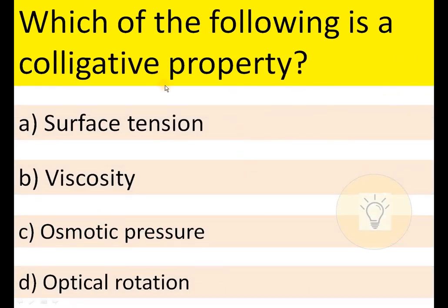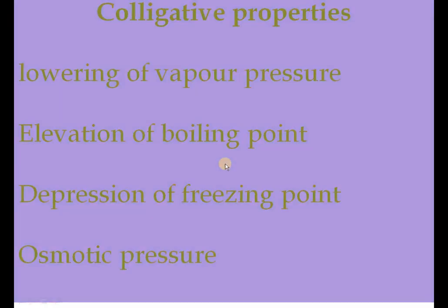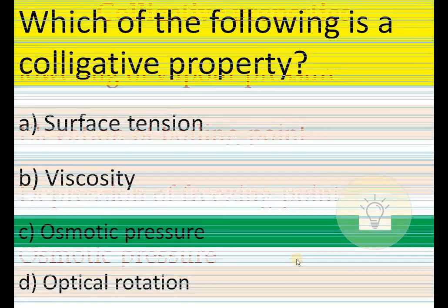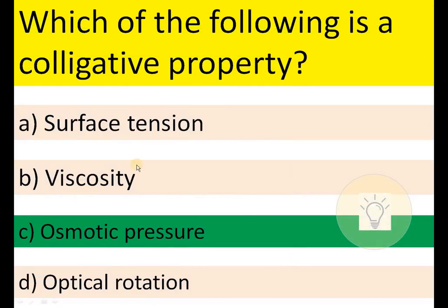Next question: which of the following is a colligative property? Surface tension, viscosity, osmotic pressure, or optical rotation. The colligative properties are: lowering of vapor pressure, elevation of boiling point, depression of freezing point, and osmotic pressure. Therefore, C — osmotic pressure — is the correct option.